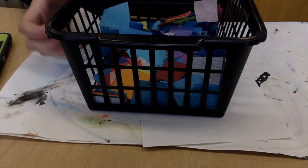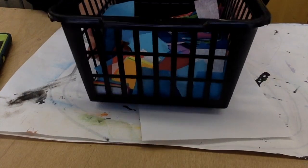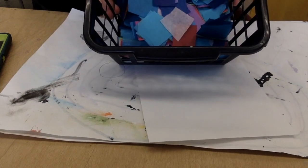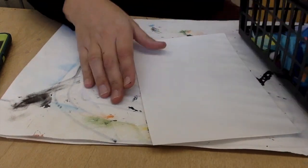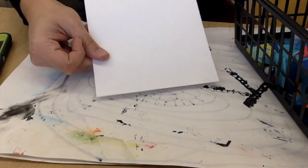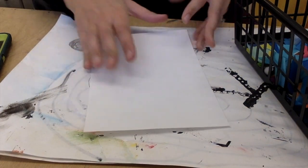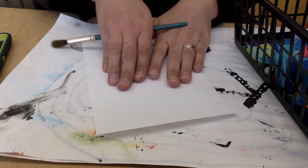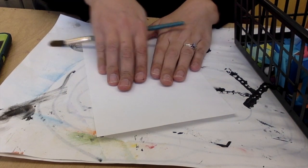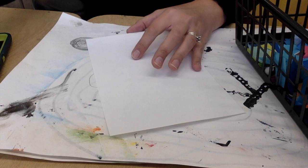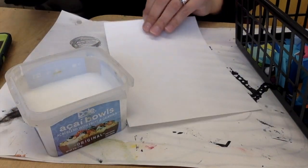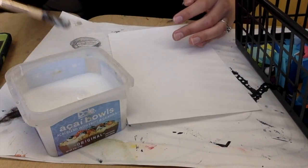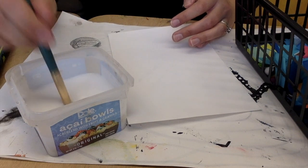You will start at your table with a basket of tissue paper squares. There's all different colors you can choose what colors you want to do. You also have a half sheet of paper. I will have your name written on one side and you will need to be sure that you collage your tissue paper onto the front. Your name will be on the back. You'll have this little container. It's got watery glue, so it's very watery.